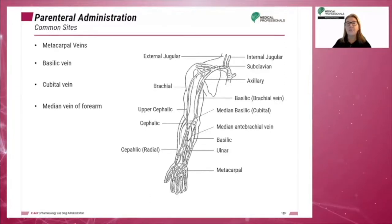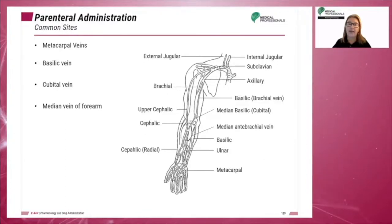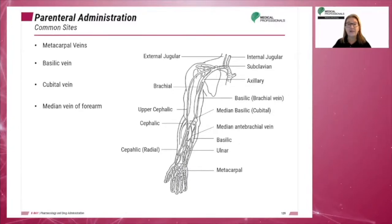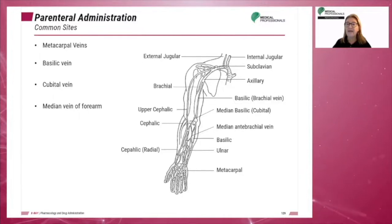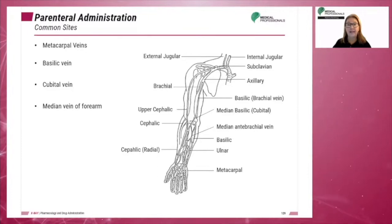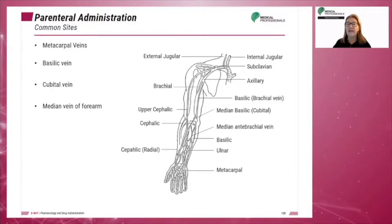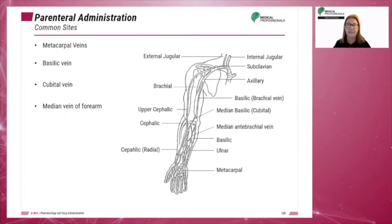The most common sites for venipuncture injections are located on the arm. These are the metacarpal veins, the basilic vein located on the inner side of the biceps just above the elbow, the cubital vein which is any vein on the elbow or forearm, and the median vein of the forearm. If arm veins are not available, pedal veins in the foot can be used.